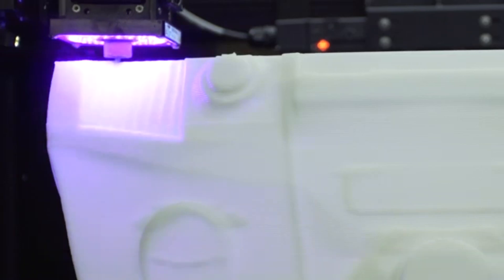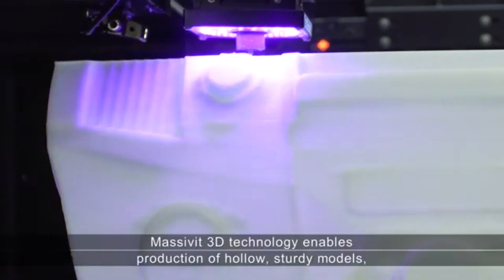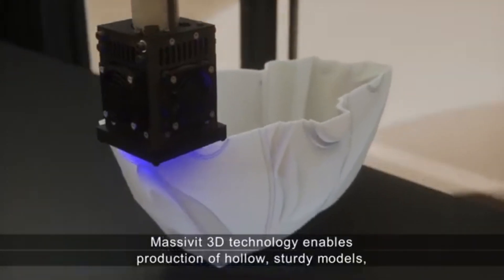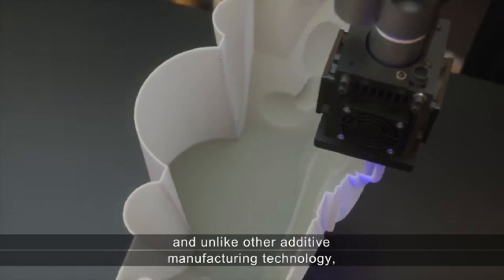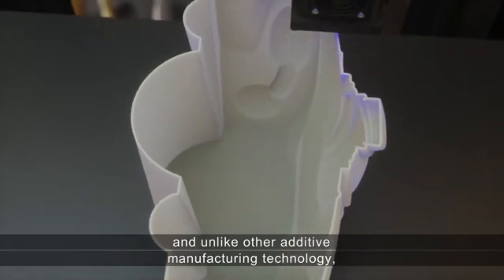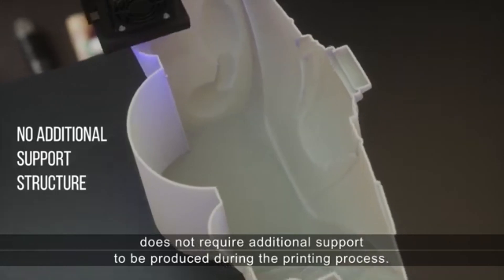Due to its high speed and the capability of the gel to cure on the fly, Massivit 3D technology enables production of hollow, sturdy models and unlike other additive manufacturing technology, does not require additional support to be produced during the printing process.